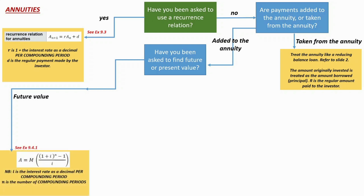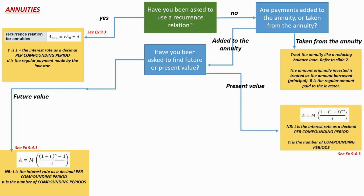If you're told it's future value, go straight to the QCAA formula sheet and use the future value formula, which is the first one on the sheet. If you're told it's present value, jump to the present value formula on the formula sheet. I've mapped some exercises from the Jacaranda textbook to these particular formulas.